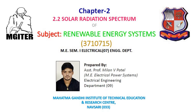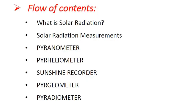The flow of contents: first, what is solar radiation; second, solar radiation measurement techniques; then different equipment used for solar radiation measurement — first, pyranometer; second, pyrheliometer; third, sunshine recorder; fourth, pyrgeometer; and fifth, pyradiometer.